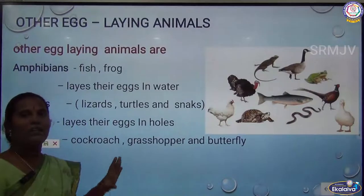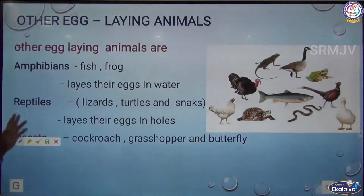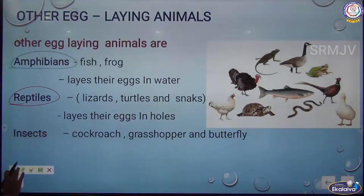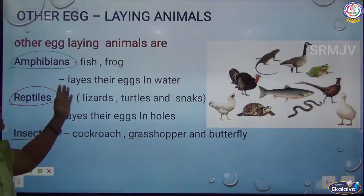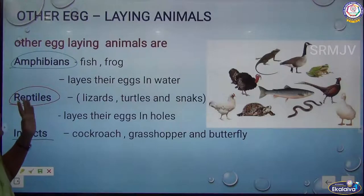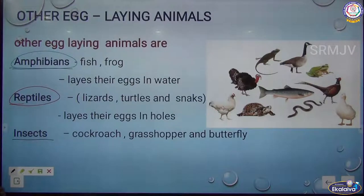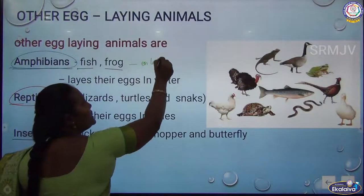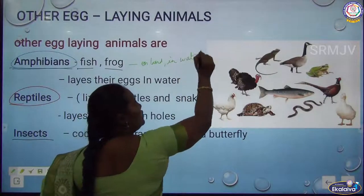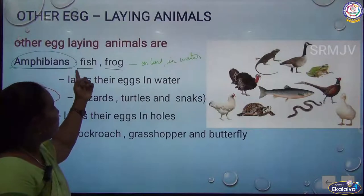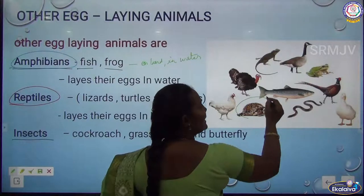Other egg-laying animals include amphibians, reptiles, and insects. Amphibians are animals that can live both on land and in water — examples are fish, frog, crocodile, and tortoise. Reptiles are animals that move on their bellies with the help of their legs and hands — in Tamil called 'urbana.' Examples of reptiles are snakes, lizards, and crocodiles.